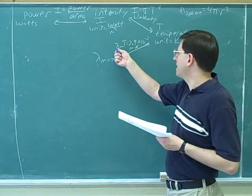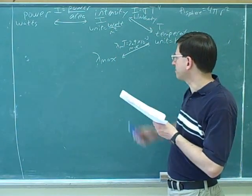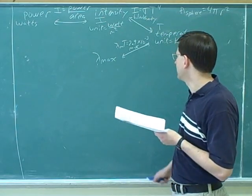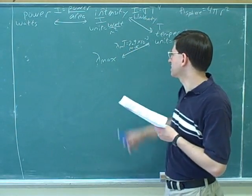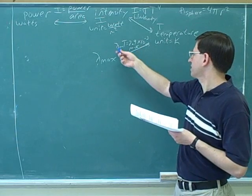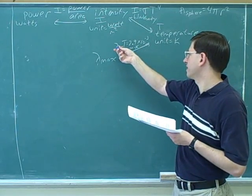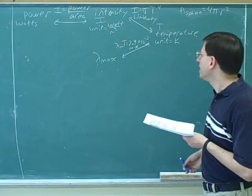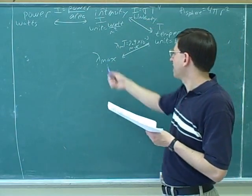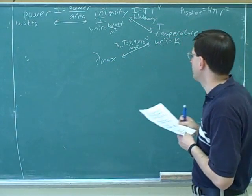So lambda sub m, the maximum wavelength times the temperature, equals 2.9 times 10 to the negative 3. And then the units on the right-hand side would be meters Kelvin. You can see these are the right units because on the left-hand side, the units are meters for lambda and Kelvin for T. So this is something else that we might have to do. We might have to find the maximum wavelength that is being emitted.